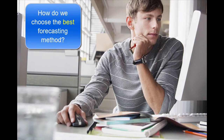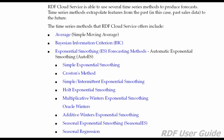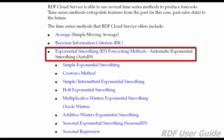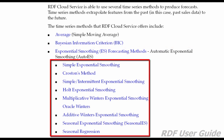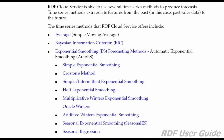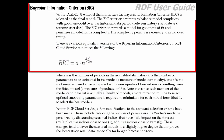We continue with the next topic: how do we select the best forecasting method? You can either select a specific forecasting method from a list of available choices, or you can choose automatic exponential smoothing. Auto ES runs a battery of methods and they compete to produce a winner. That winner is selected by balancing the forecast error against the complexity of the method used to produce that forecast.